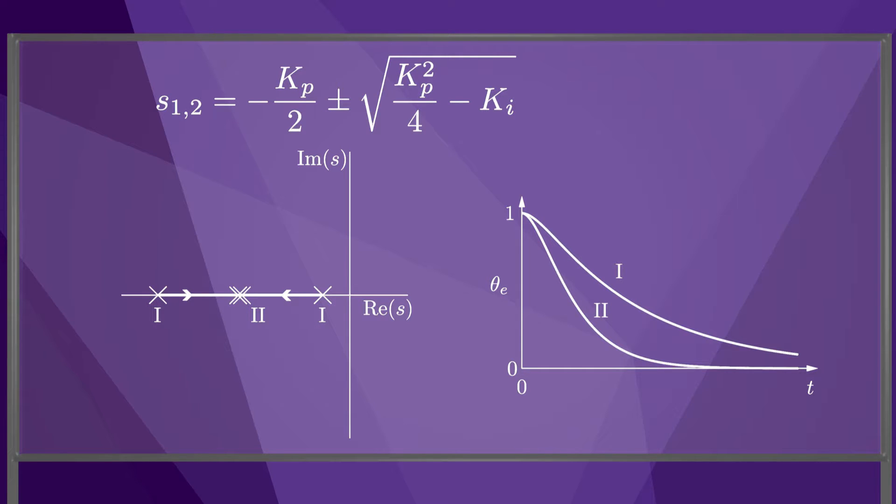Increasing the gain Ki pushes the two roots toward each other until critical damping, where both roots are located at minus Kp over two. Note that the critically damped response is faster than the overdamped response.